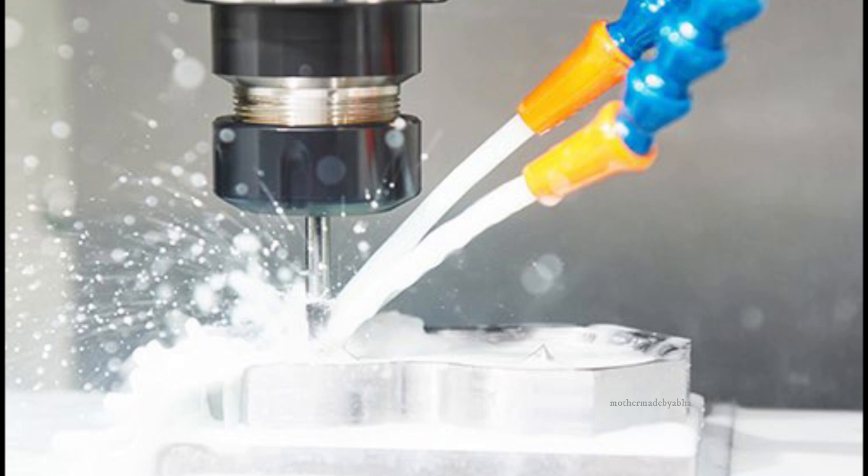Friends, today we will make cutting oil. Do you know what is cutting oil? When we cut metals in factories, a lot of heat is generated. To reduce its heat, we add cutting oil on it. This cutting oil gives it a cooling effect and reduces its temperature.